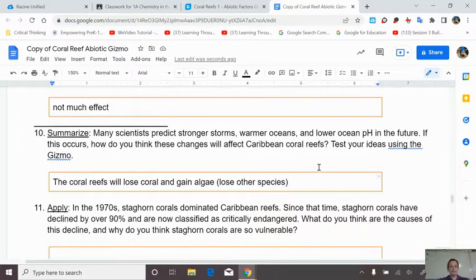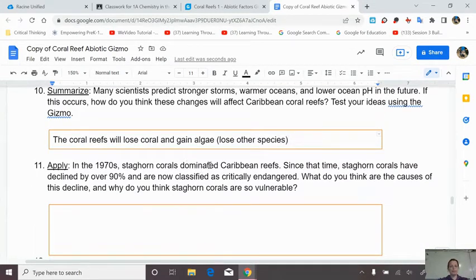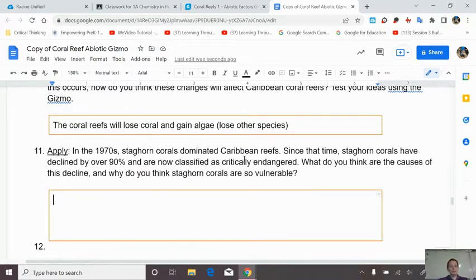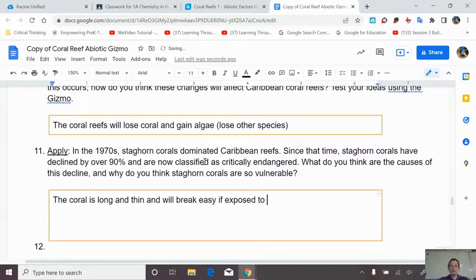Scientists predict stronger storms, warmer oceans, lower pH. How do you think these will affect the coral reefs? Coral reefs will lose coral and gain algae and lose other species. The coral is like the first thing to go and the algae goes up and then the number of fish goes down. We've seen this and we don't need to test it. So here we go. Staghorn coral dominated the reefs. Since then it has declined, critically endangered. What do you think are the causes of this decline and why you think staghorn coral is so vulnerable? Again, with the staghorn, the coral is long and thin and will break easy if exposed to rough waters. It's that simple. If the ocean starts moving faster, those long, thin branches start to break off. It's sad, but it happens.